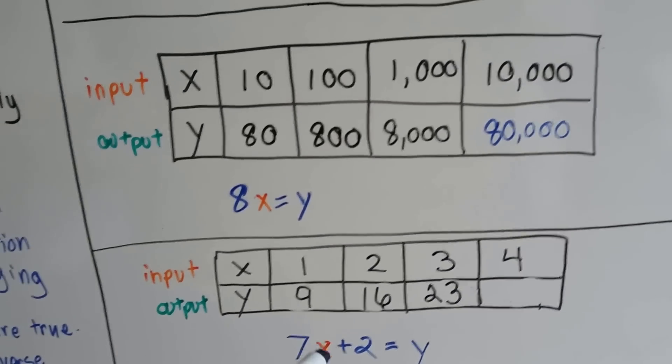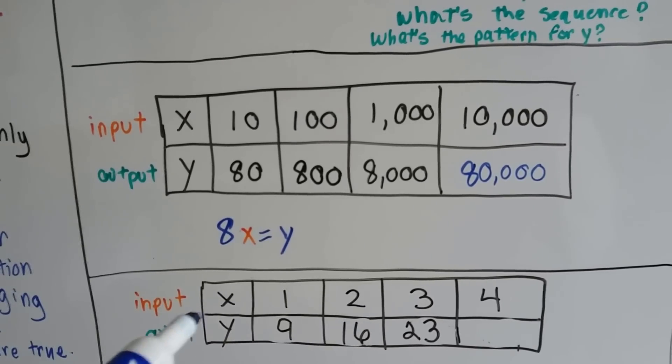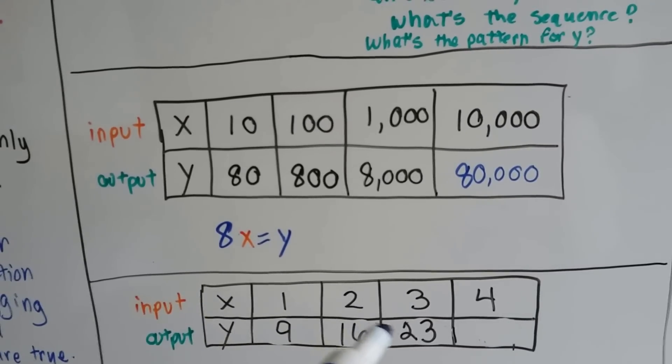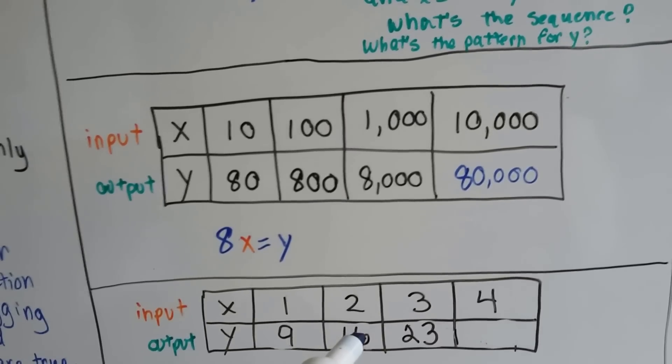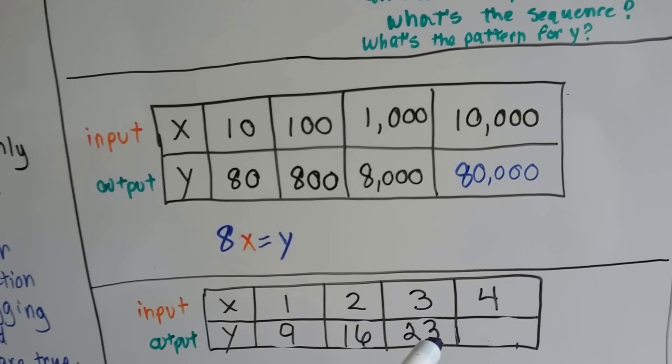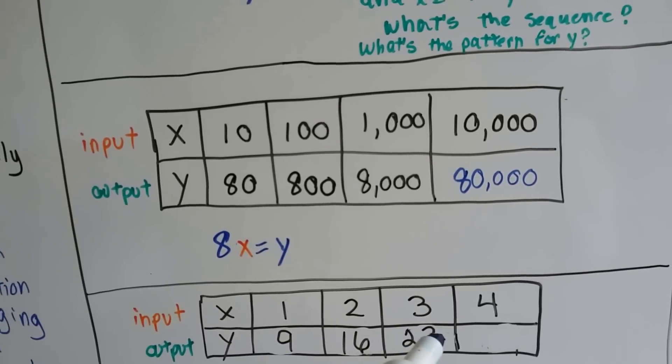And then this one, if you look at the x and the y, how is y going up? 9 and then 16. What's 16 take away 9? It's 7. And then it goes to 23. What's 23 take away 16? It's 7. So it's going up by 7.